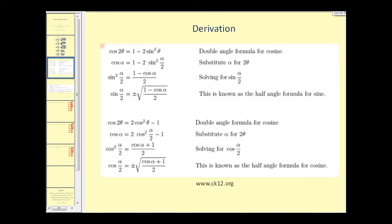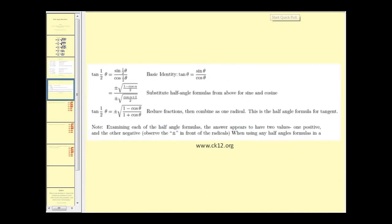I did include the derivation of these identities. We don't have time right now to go through them, but you may want to pause the video and see how we can obtain these formulas. The next slide also shows how to find the half angle identity for tangent. Notice that it comes from taking sine of one-half theta and dividing by cosine of one-half theta.